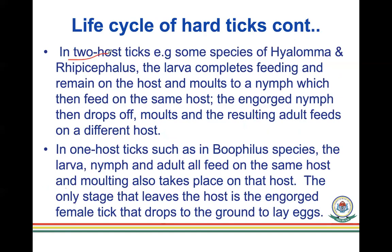In two-host ticks such as Hyalomma and some Rhipicephalus species, the larva completes feeding and remains on the host, molting to nymph which then feeds on the same host. The engorged nymph then drops off and molts into an adult that feeds on a different host. In one-host ticks such as the buffalo tick, the larva, nymph, and adult all feed on the same host and molting takes place on that host; only the engorged adult female drops off to lay eggs.